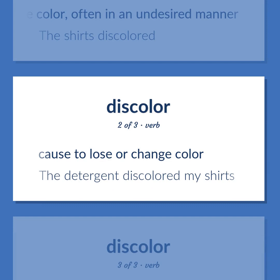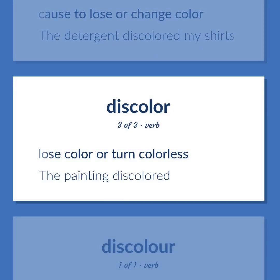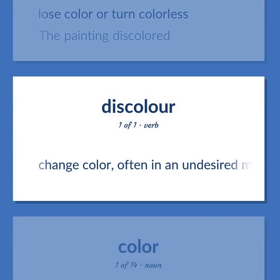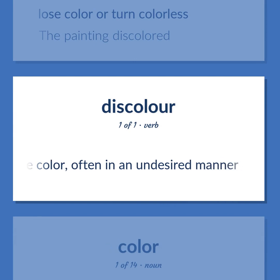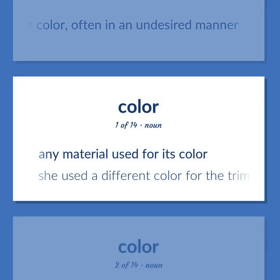Cause to lose or change color — the detergent discolored my shirts. Lose color or turn colorless — the painting discolored. Change color, often in an undesired manner. Any material used for its color — she used a different color for the trim.